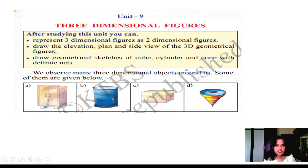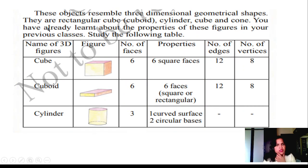This is Almirah, it is a drum, box, and top. These objects resemble 3-Dimensional geometrical shapes. They are rectangular cube, cuboid, cylinder, cube and cone. You have already learnt about the properties of these figures in your previous classes. Study the following table.